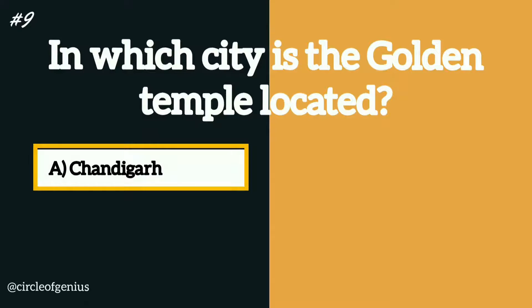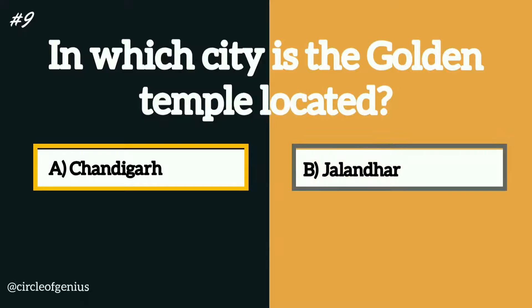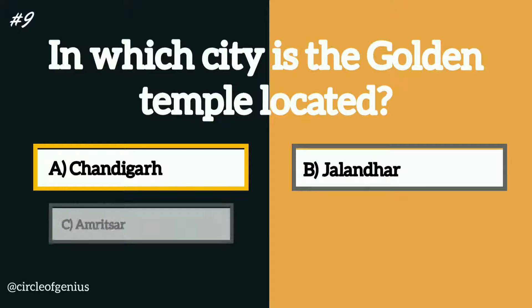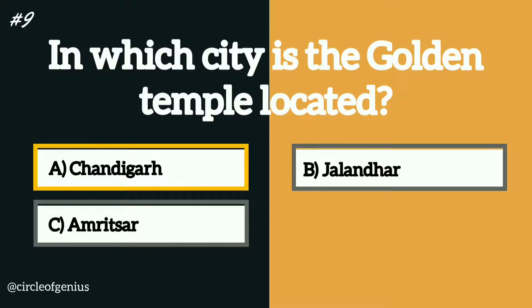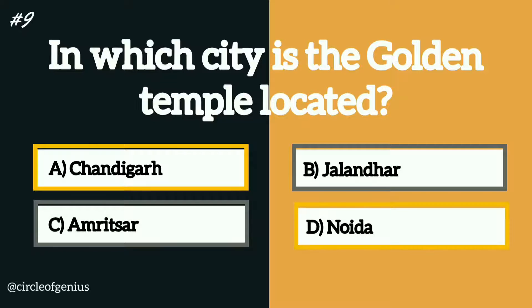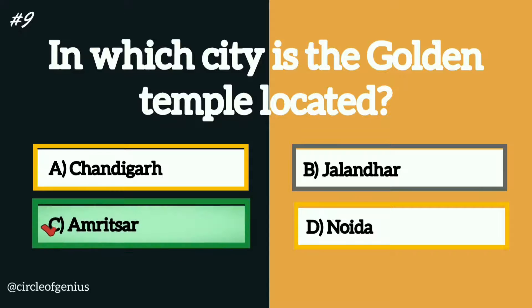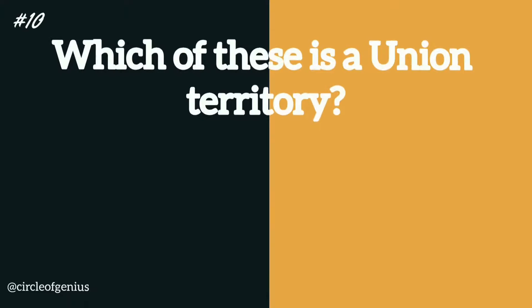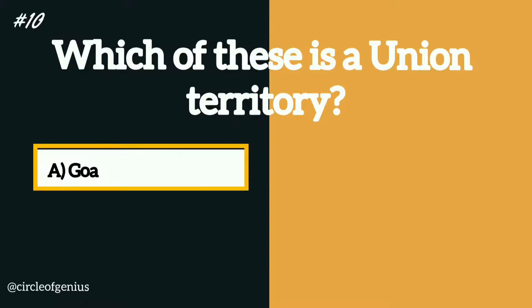The correct answer is option C, Amritsar. Question number ten: which of these is a union territory? Option A: Goa, B: Puducherry, C: West Bengal, D: Tripura.